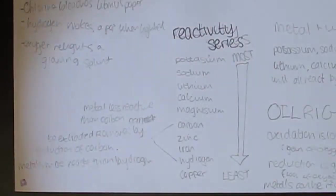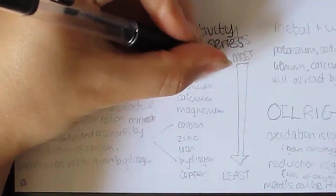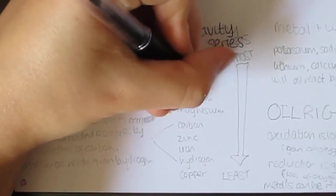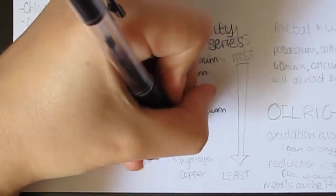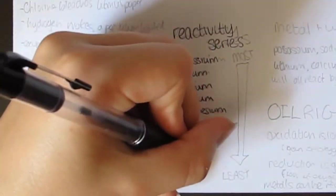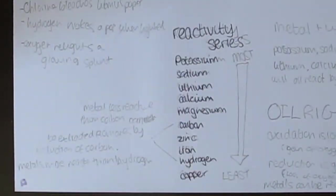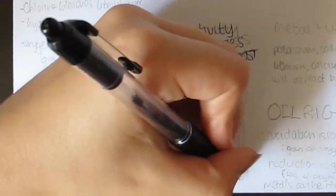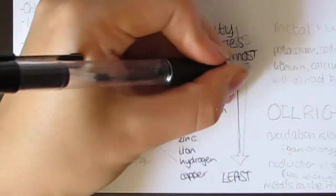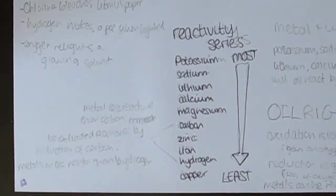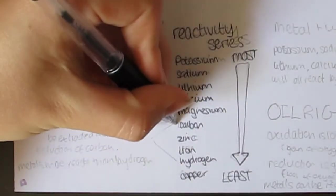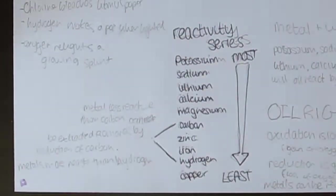The reactivity series is a comparative list of metals reactivity. This is determined by how easily they form positive ions or lose electrons. This is also how well it reacts with water or acid and forms a definitive order of reactivity: potassium, sodium, lithium, calcium, magnesium, carbon, zinc, iron, hydrogen and copper, with potassium being the most reactive and copper being the least reactive.